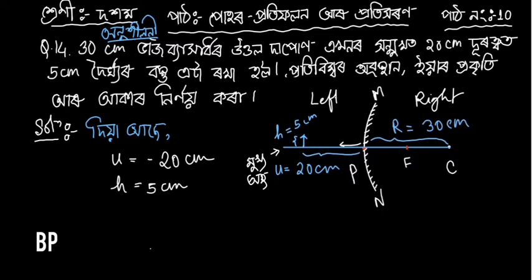So u is minus 20 cm. The focal length f is 5 cm. R is 30 cm. This is right.